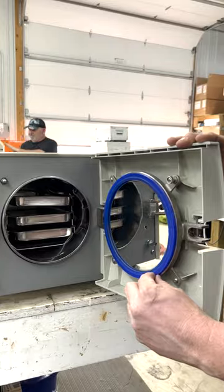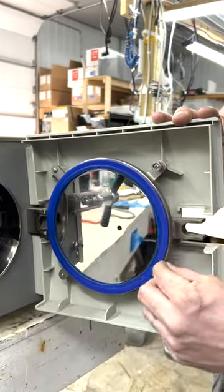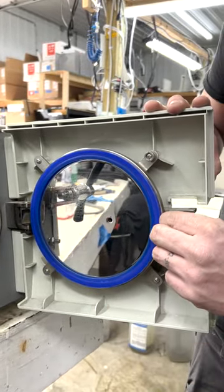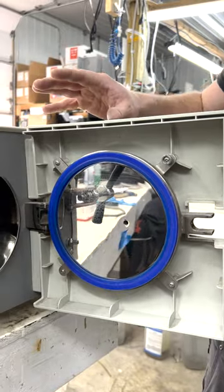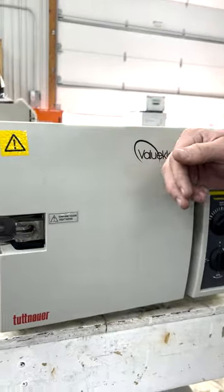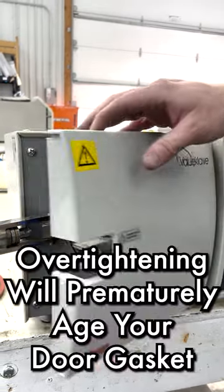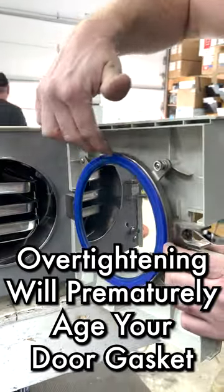This has an OEM door gasket. As you notice, this is starting to get a ring all the way around. If you leave your door closed in a tight position when you're not using the autoclave, it will prematurely age your gasket.